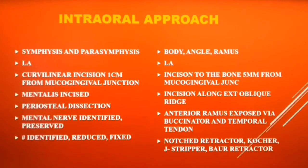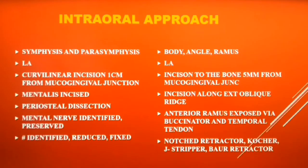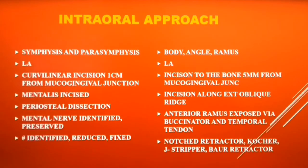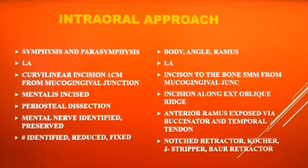The most common and technically easier approach is the intraoral approach. For fractures of the anterior mandible, the incision region is first infiltrated with local anesthetic solution. The lip is then retracted and a curvilinear incision is made leaving at least 1 cm of mucosa attached to the gingiva. The mentalis muscle is incised and dissection is carried subperiosteally to identify and preserve the mental nerve. The fracture site is identified, reduced, and fixed, and the incision is closed in layers. Essentially, you give a degloving or anterior vestibular incision to gain access to parasymphysis and symphysis fractures.